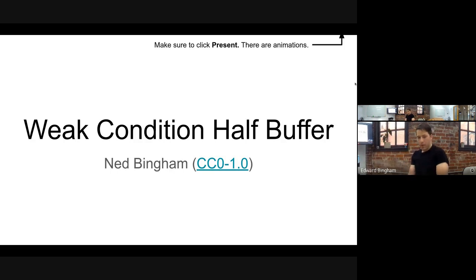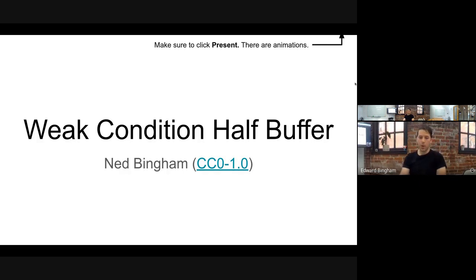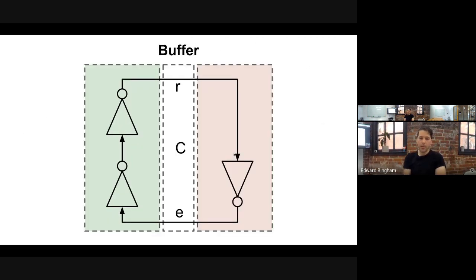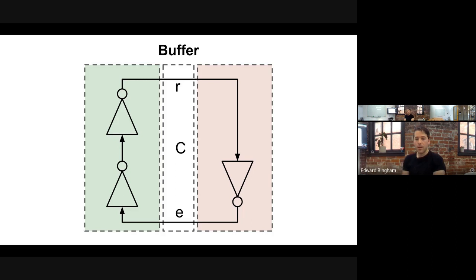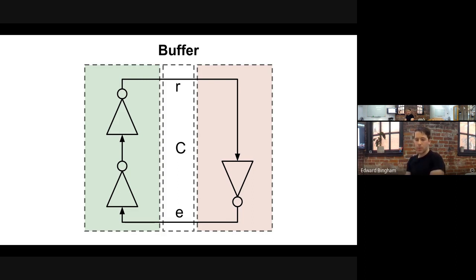Today we are covering a basic self-timed pipeline stage. This builds off the most basic self-timed circuit from last time: a source on the left and a sink on the right communicating over a channel C. The channel has a request rail and an enable rail. When you want to send information, you raise the request rail, and when done processing you lower the enable rail, then the inverse transitions reset the channel.